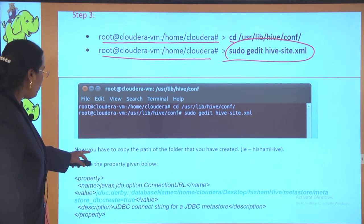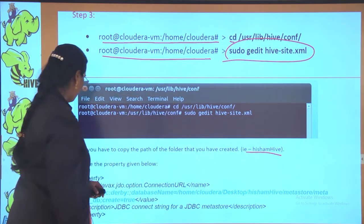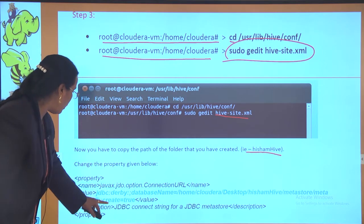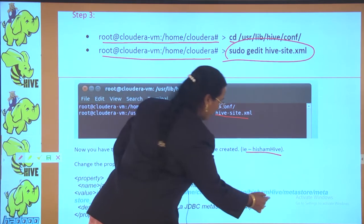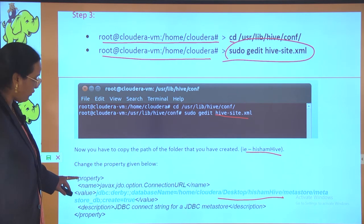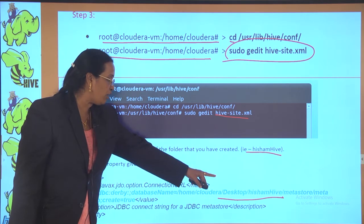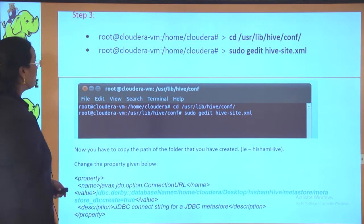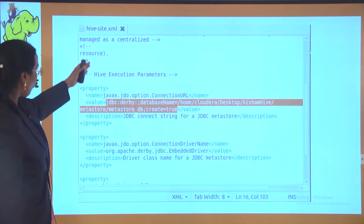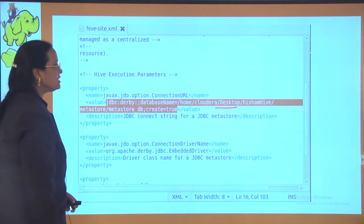Once you open the file, copy the path of the folder you created on the desktop. In the hive-site.xml file, keep everything as it is — you only need to change the value part where the folder path is specified. Change it to the desktop folder path (e.g., desktop/hive). Do not change the property names or description parts.